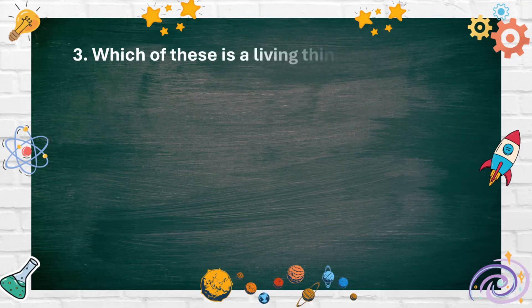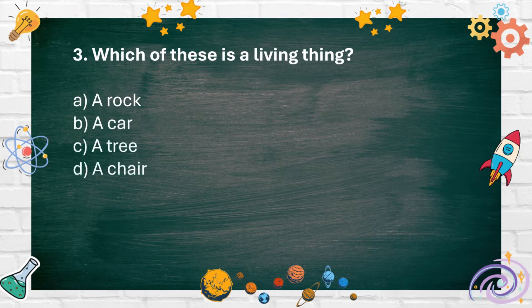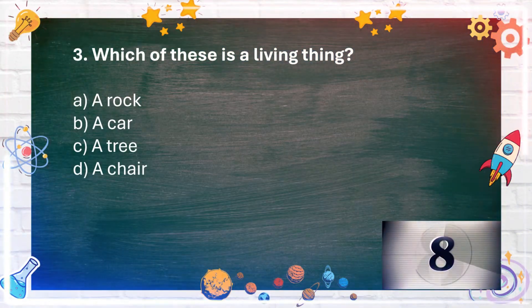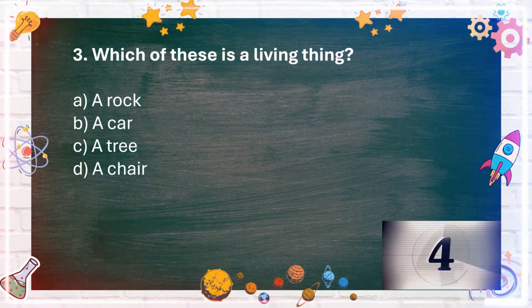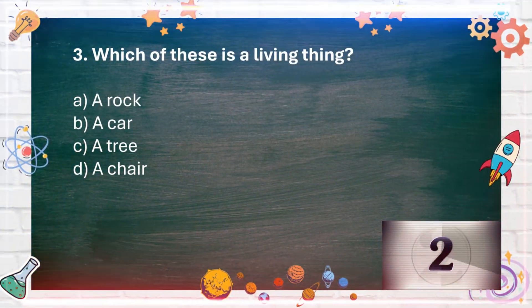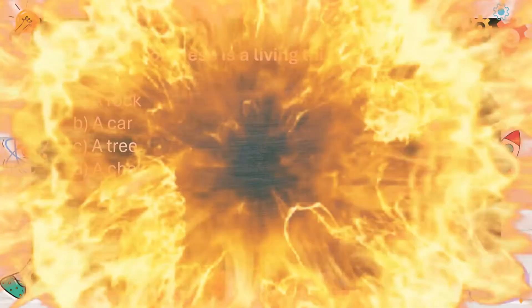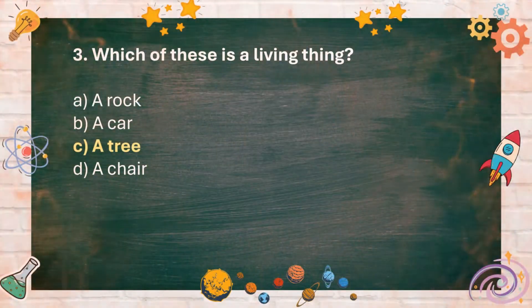Number 3. Which of these is a living thing? A. A rock B. A car C. A tree D. A chair. The answer is C. A tree.